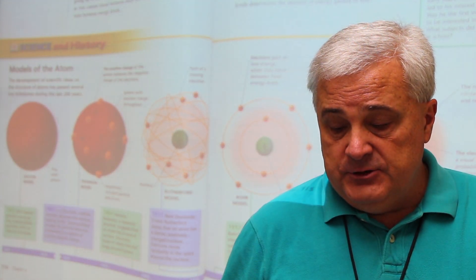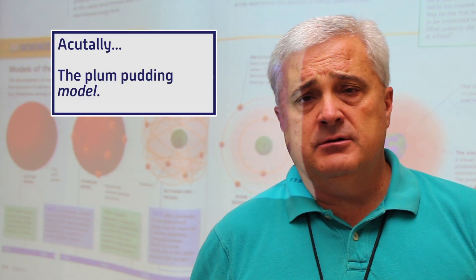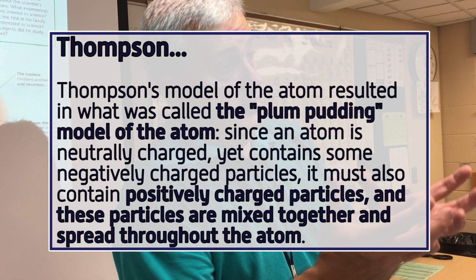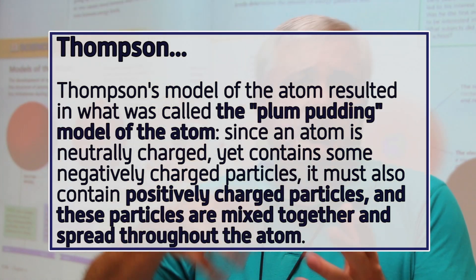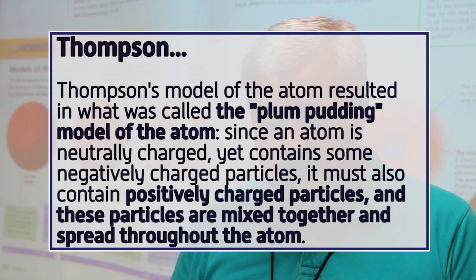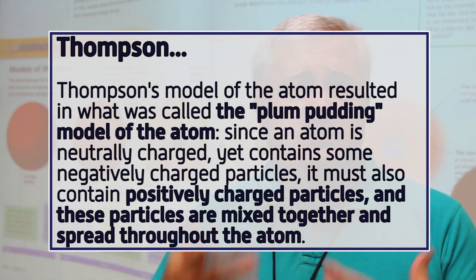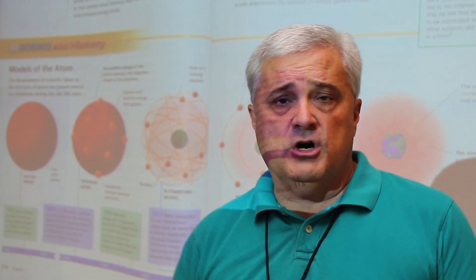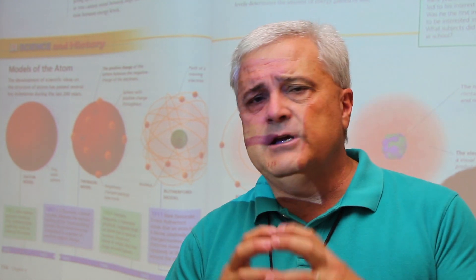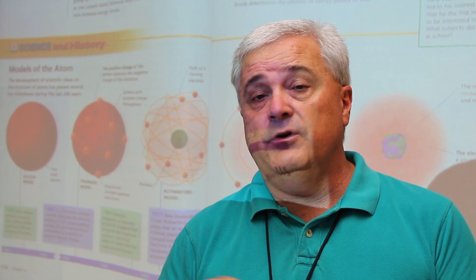Thomson's experiments provided the first evidence that atoms were made of even smaller particles. Rather than just being a sphere, we now have something with positive and negative charges mixed together. This became what was called the plum pudding model. Like a container of plum pudding with plums scattered around in the pudding, Thomson thought the charged particles inside an atom were just kind of scattered around internally.